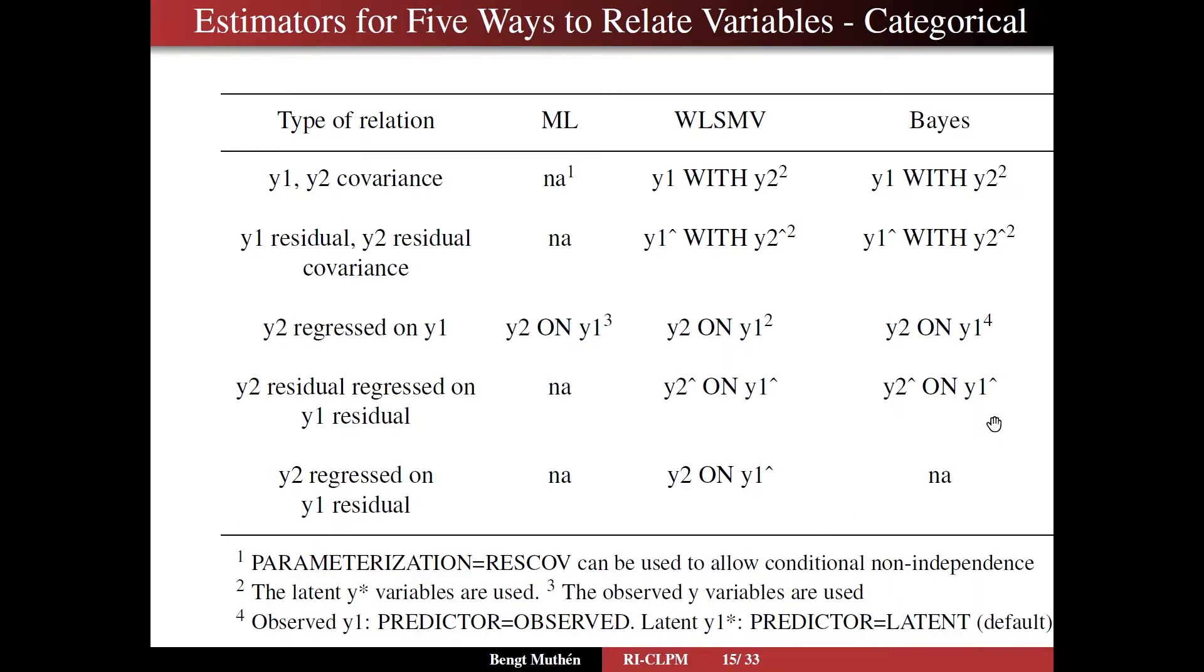But for Bayes, you don't have, for ML and for Bayes, you do not have the moving average situation available to you. It could be developed for Bayes, but it isn't there.